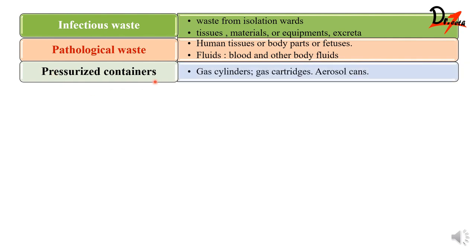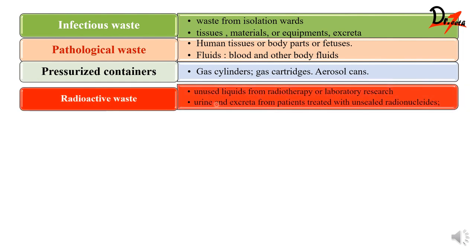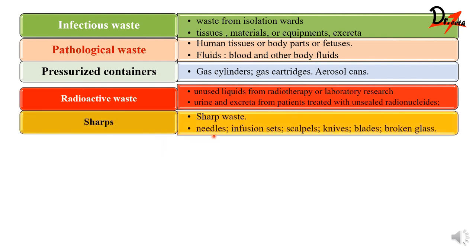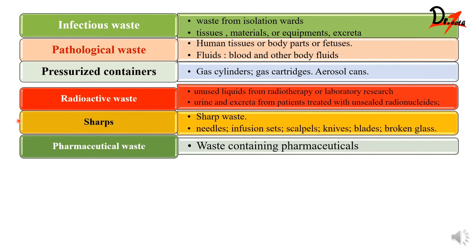Next we have pressurized containers — those are gas cylinders, gas cartridges, and aerosol cans. Then radioactive waste, which is unused liquids from radiotherapy or laboratory research. Also, excreta or urine of patients treated with radionuclides may contain radioactive waste. Then we have sharps — needles, infusion sets, scalpels, knives, blades, and broken glass all come under sharps.